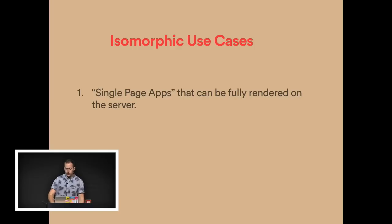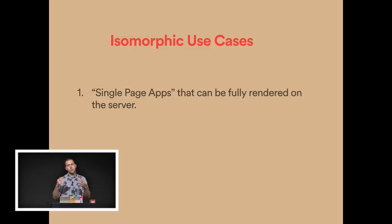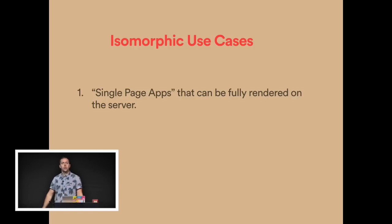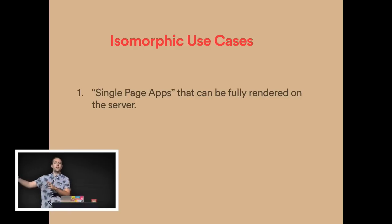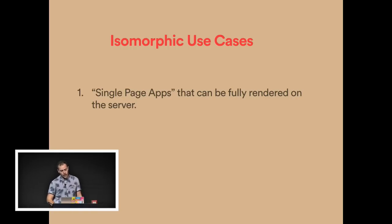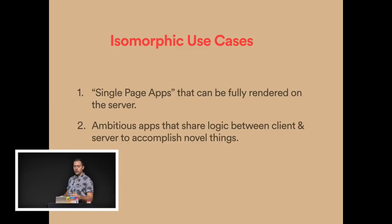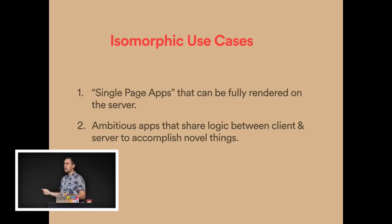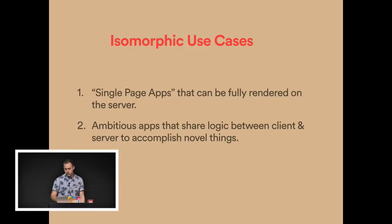There are two categories of isomorphic use cases. The first is a single page app that can be fully rendered on the server — as you click around it renders client-side, but if you refresh the page, the server can serve up the full HTML. Any deep link into your single page app can be fully rendered on the client or the server, mainly for performance. The second category is more interesting: ambitious apps that share logic between client and server to accomplish novel things like advanced real-time support or offline support.